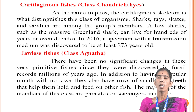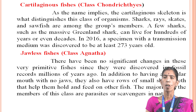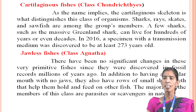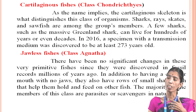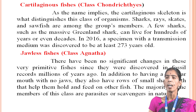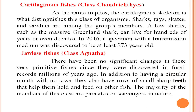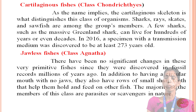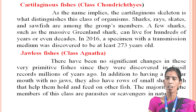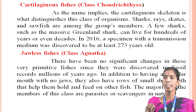Next, jawless fishes. There have been no significant changes in these very primitive fishes since they were discovered in fossil records millions of years ago. In addition to having a circular mouth with no jaw, they also have rows of small sharp teeth that help them hold and feed on their prey. The majority of the members of this class are parasites or scavengers in nature.